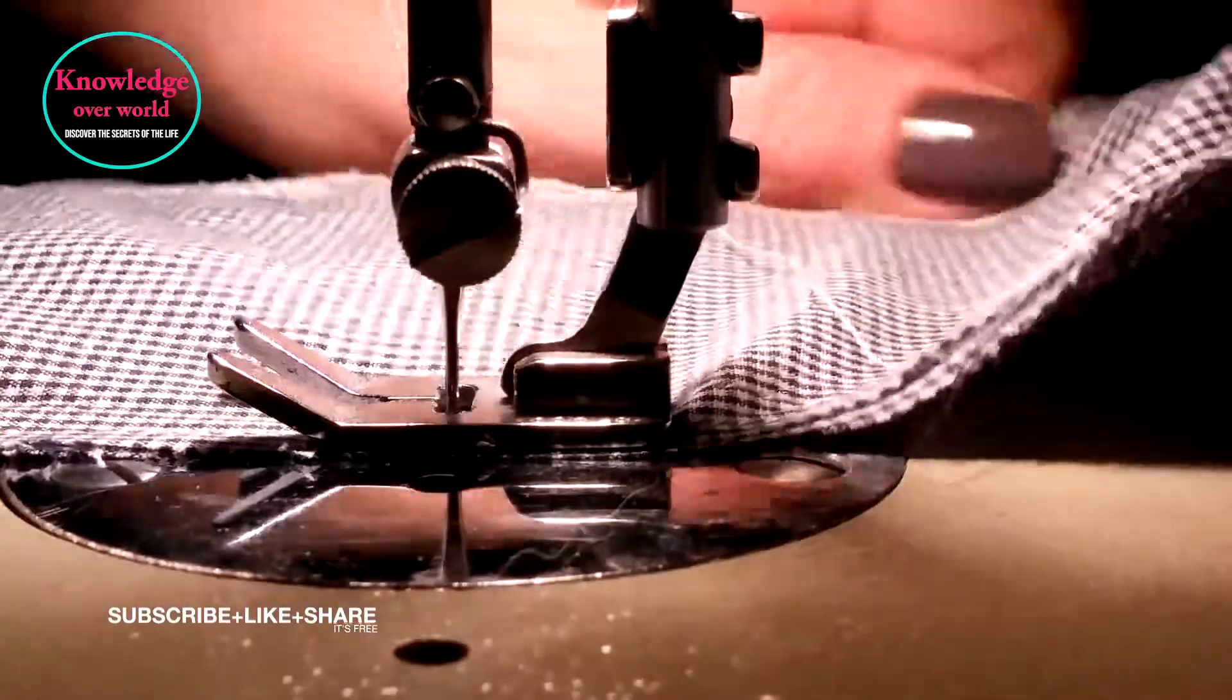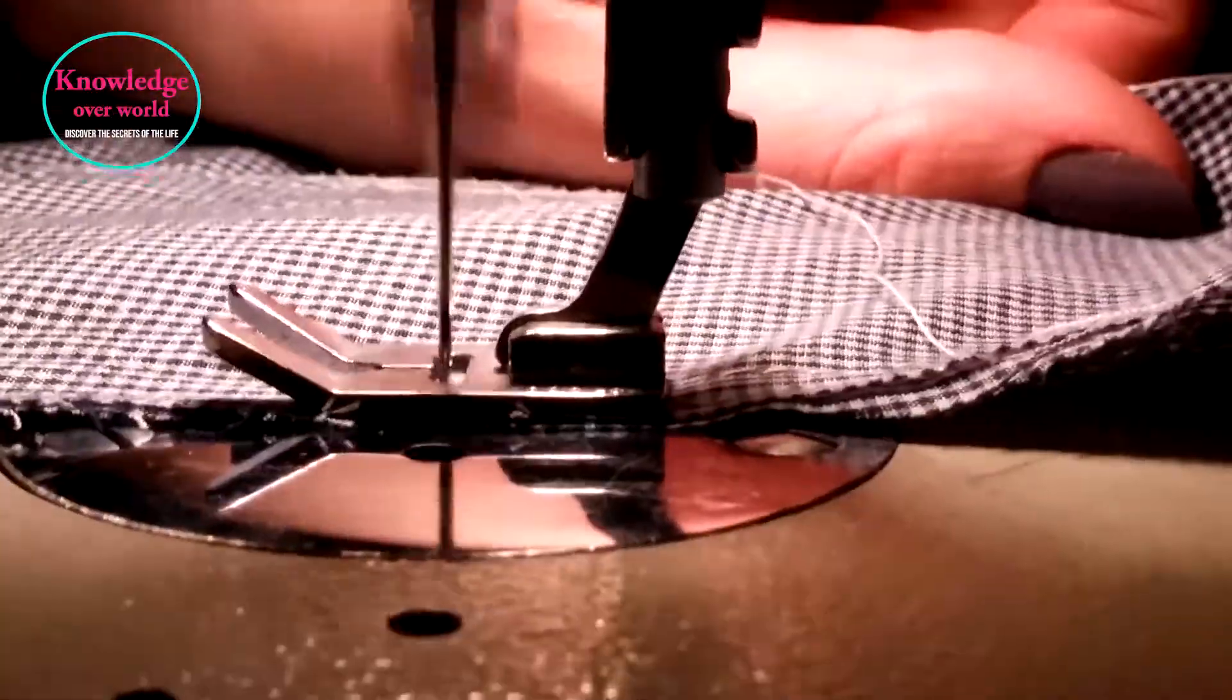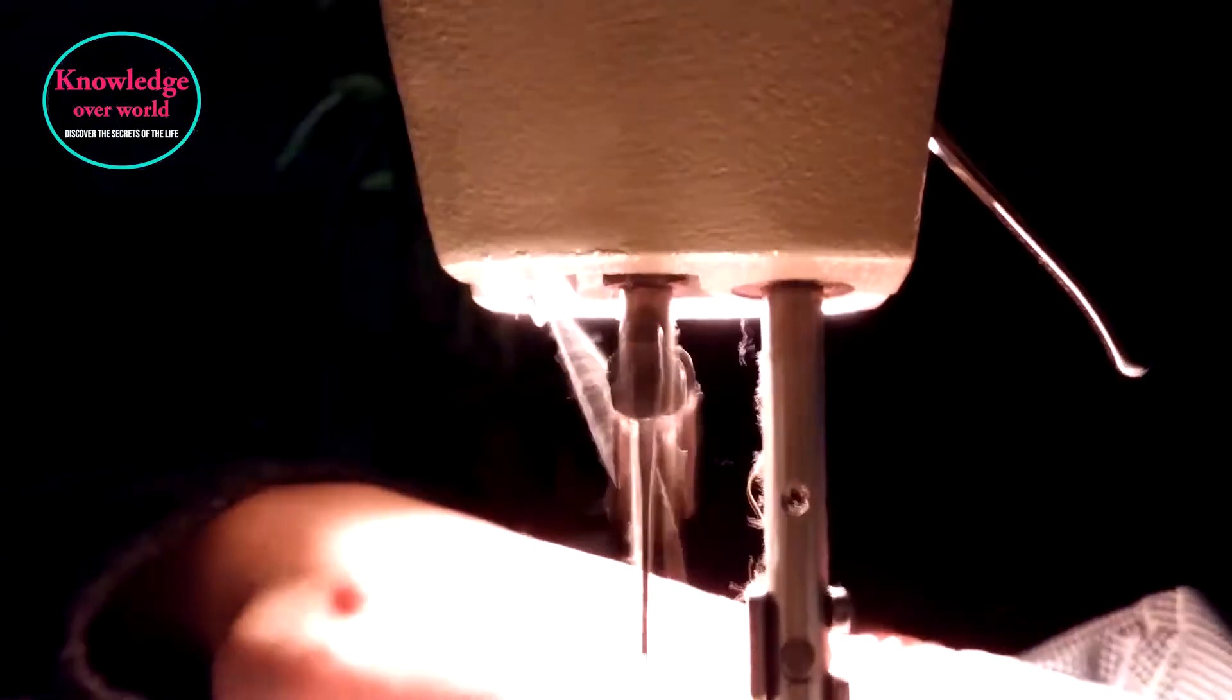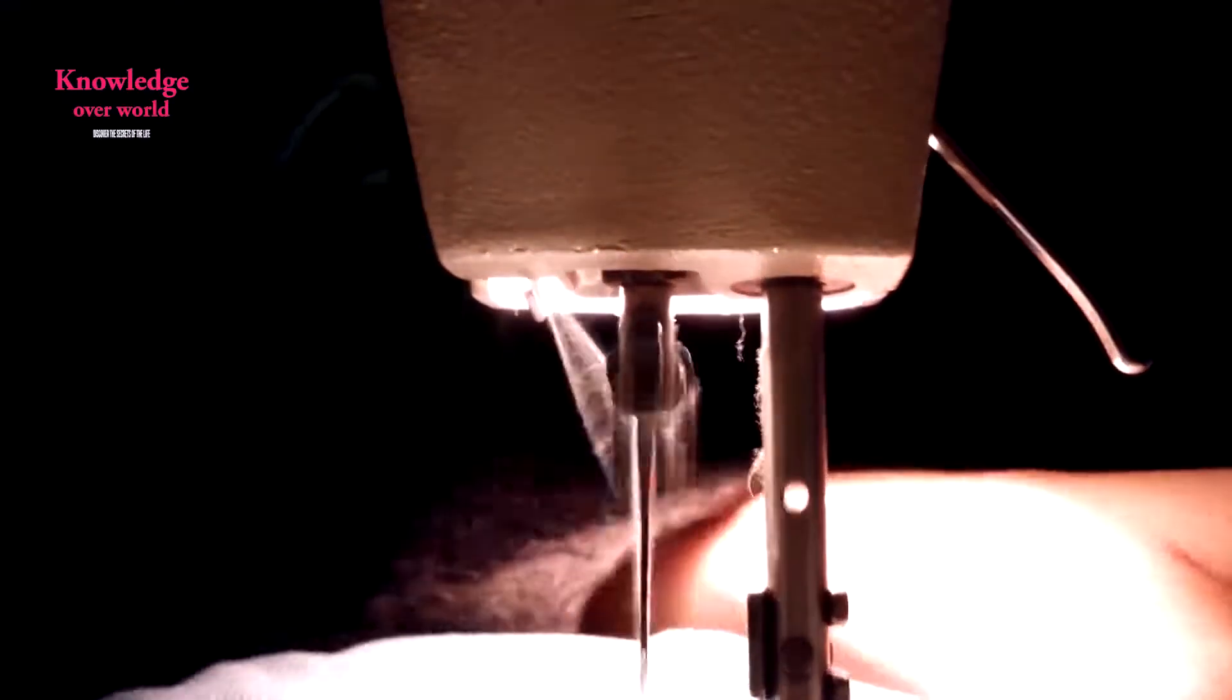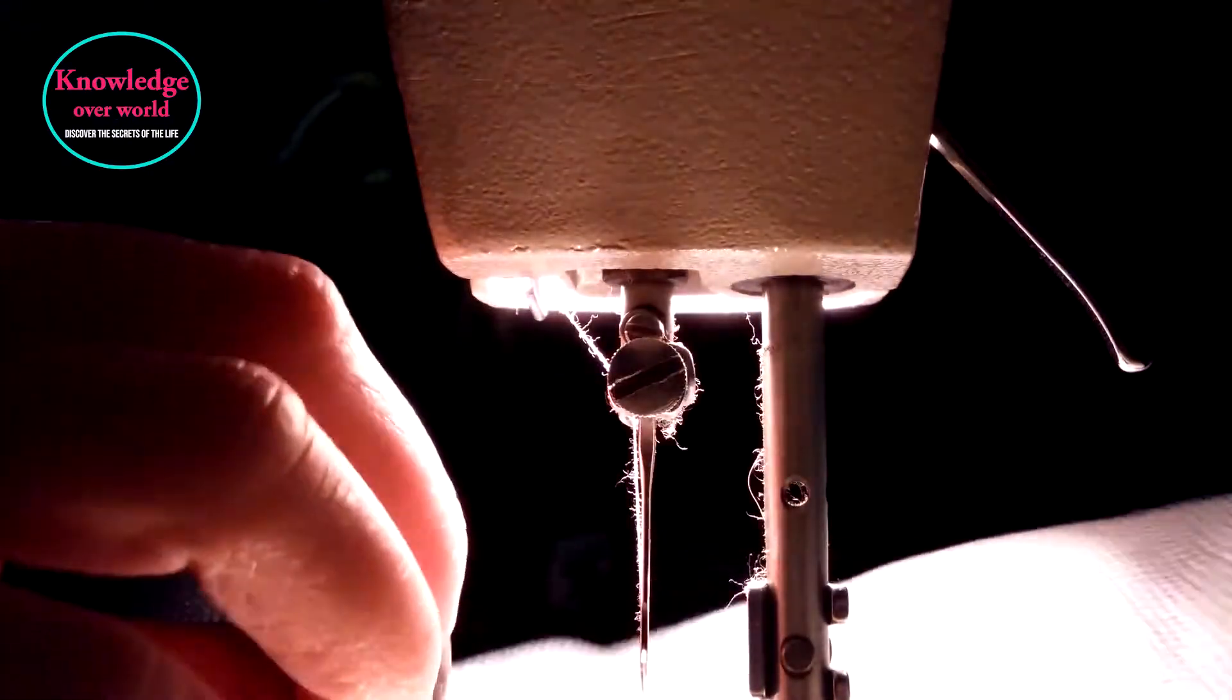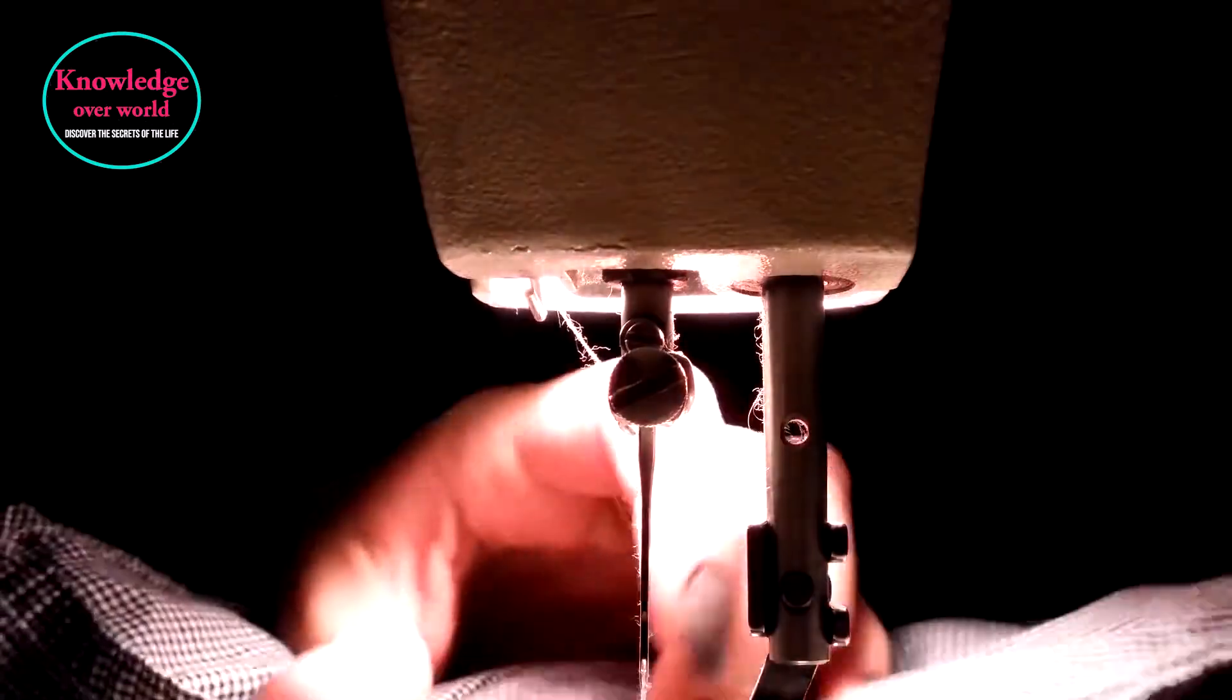In 1885, a French tailor, Bartle Melly Femenier, invented a practical sewing machine where the principle of its work was to use an embroidery needle that had a dog-like shape in its head.